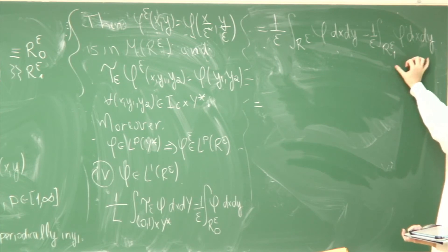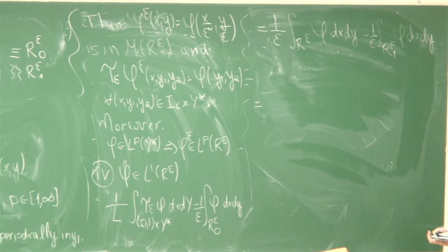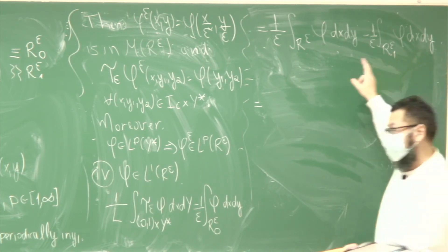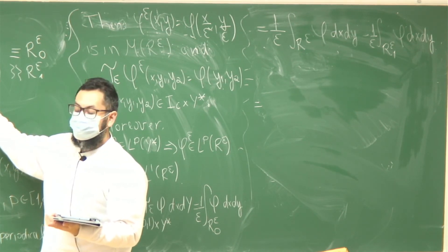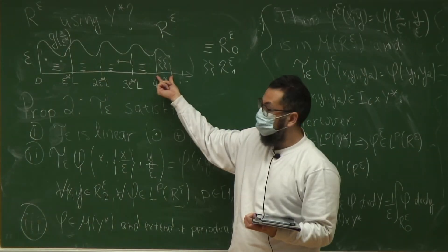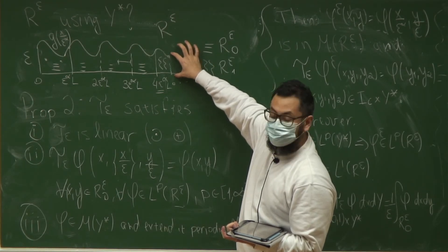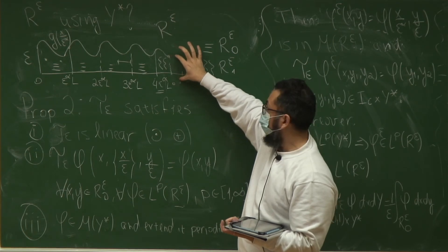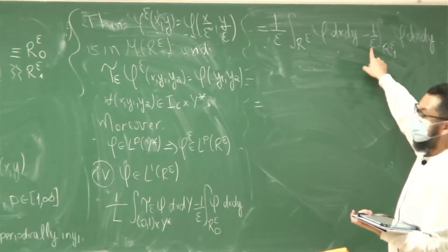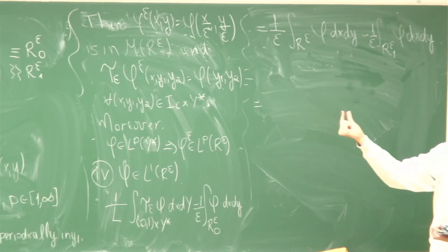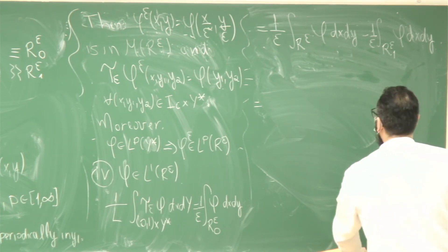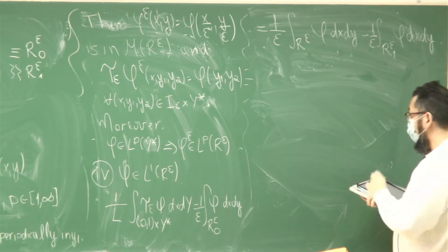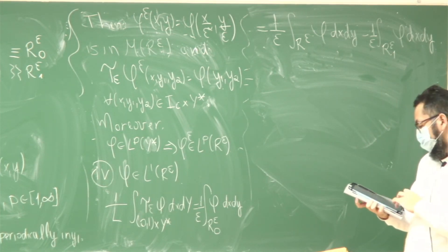It makes sense because in the remaining region we have something of order epsilon_alpha in the horizontal and order epsilon in the vertical variable. The order epsilon in the vertical will cancel with the rescaling, and the horizontal term of order epsilon_alpha will make it go to zero. This is the most important property of the method. If we look at the properties, what would be expected: the unfolded function will be in L^p of something, and we will also state something about the derivatives.